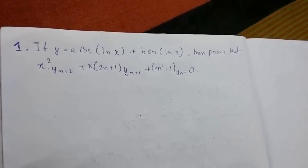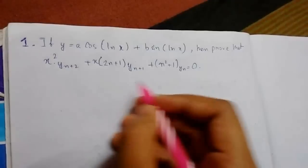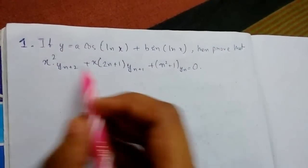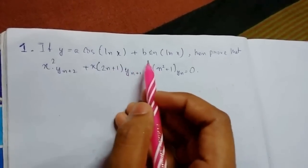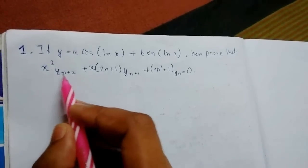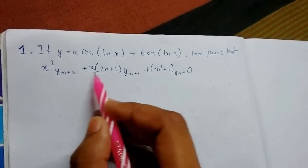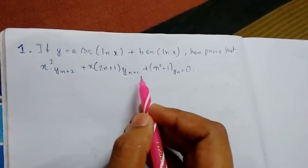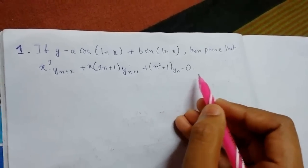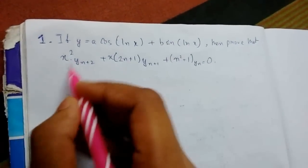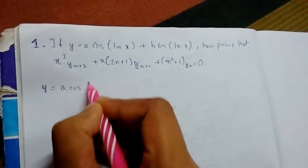Welcome back guys. Today we'll be solving problems on successive differentiation. Let us take on the first problem: if y equals a·cos(ln x) + b·sin(ln x), then prove that x²·y_{n+2} + (2n+1)·x·y_{n+1} + (n²+1)·y_n equals 0.